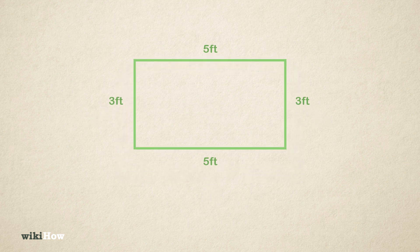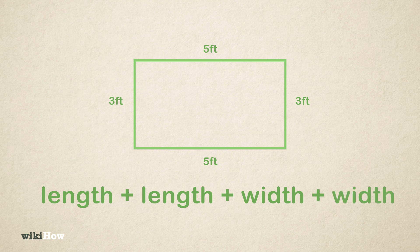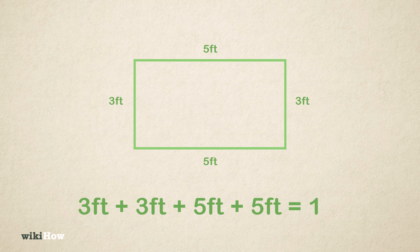Add all your sides together. On a piece of scratch paper, or on the paper you have written the guided example, write length plus length plus width plus width. So for the guided example, you would add 3 plus 3 plus 5 plus 5 to get a perimeter of 16 feet, 4.9 meters.